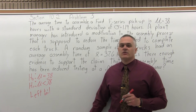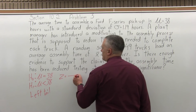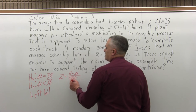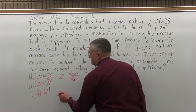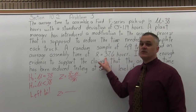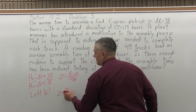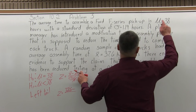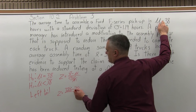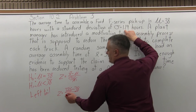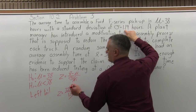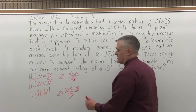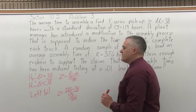Step four: calculate the value of z. The formula for z in a hypothesis test is: z equals x-bar minus mu, divided by sigma over the square root of n. Filling that in: x-bar is 37.6, mu is 38, sigma is 1.19, and n is the sample size of 49.